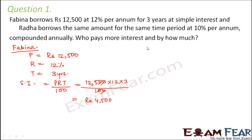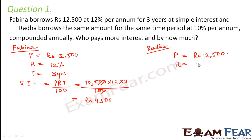Now let us calculate the interest that Radha has to pay. In case of Radha, the principal amount is the same, that is 12,500, and the rate of interest is 10% per annum compounded annually. That means the interest rate will be applicable for one year, so the principal amount will change every year. The time period is three years. Because it is compounded annually, there are three conversion periods.